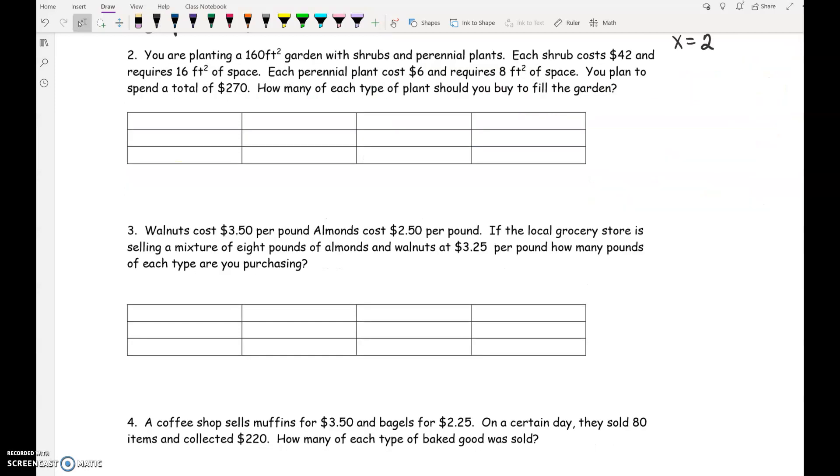You are planting a 160 square foot garden with shrubs and perennial plants. Each shrub costs $42 and requires 16 square feet of space. Each perennial plant costs $6 and requires 8 square feet of space. You plan to spend a total of $270. How much of each type of plant should you buy to fill the garden? That last sentence really tells you what your X's and Y's are. That tells you that the types of plants are your X's and Y's. So one type is shrubs.